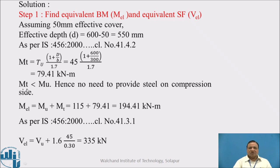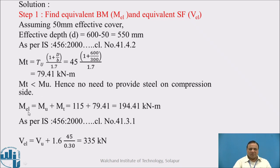Since MT is less than MU, there is no need to provide steel on the compression face — that means we need not provide compression steel. Therefore, MEL, the equivalent bending moment, is MU plus MT, which gives 194.41 kNm.